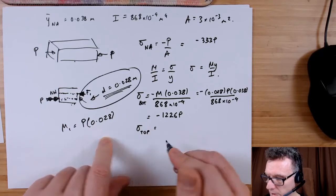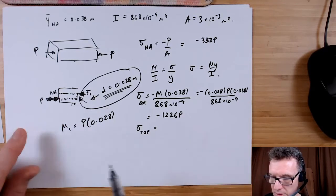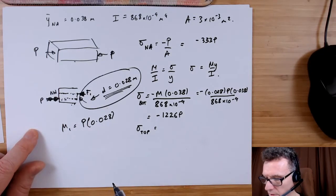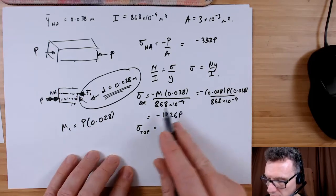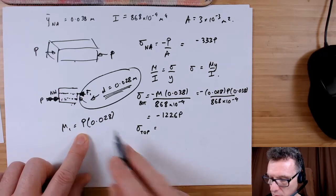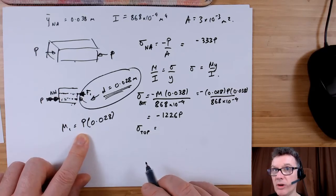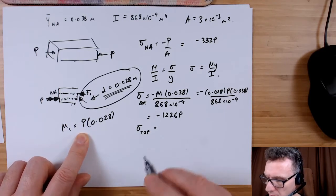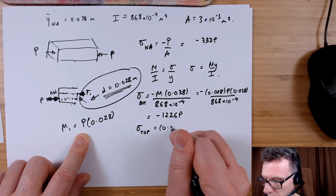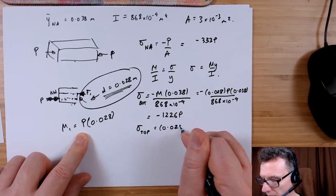That's going to be positive, right. So the stress at the top will be this M value which I can write described in terms of P, so that's 0.028 P. And then to get to the top, what is that distance? I've had it before, it's going to be the total thing is 60 millimeters high.